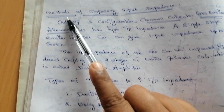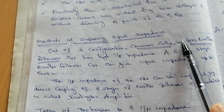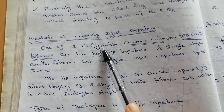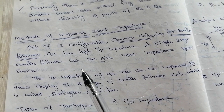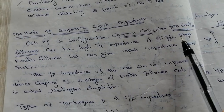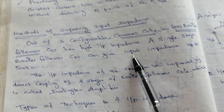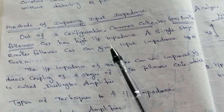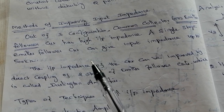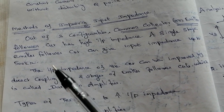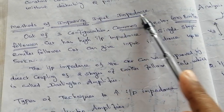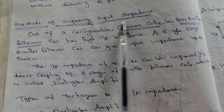The next topic is methods of improving input impedance. We already discussed in unit 1 the comparison of three configurations: common base, common emitter, and common collector. According to this comparison, the common collector or emitter follower has the highest input impedance. A single stage emitter follower circuit can give input impedance up to 500 kilo ohm, which is very high compared to common base and common emitter configurations.